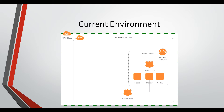So this is the environment we currently have. We have created a virtual private cloud to host our environment, and we have created a public subnet with an Internet Gateway attached to it. We have created three EC2 instances — one master and two nodes. We had a hosted zone resolving our nodes internally within the public subnet, and we have a public hosted zone that resolves to our master node from the outside world.